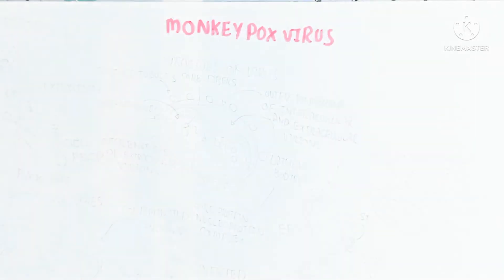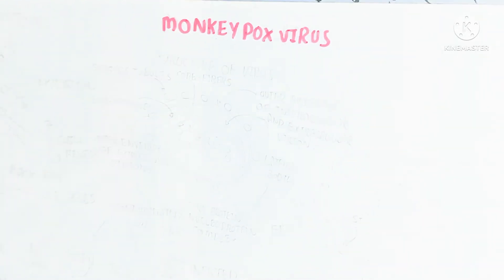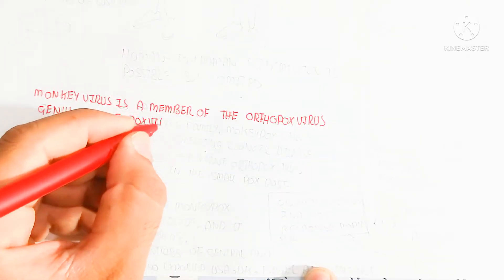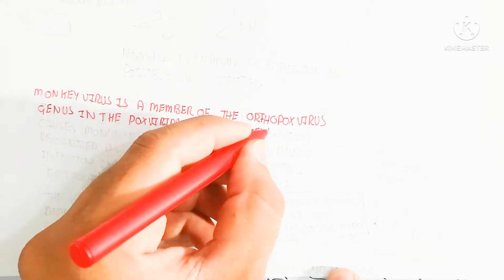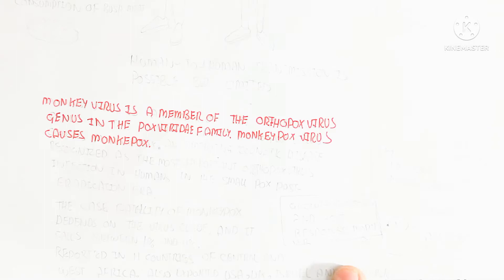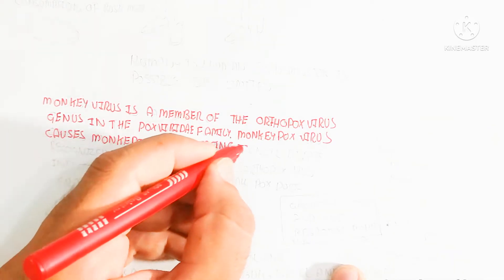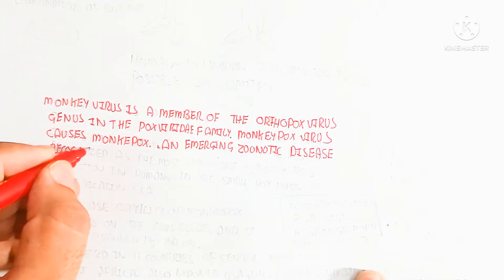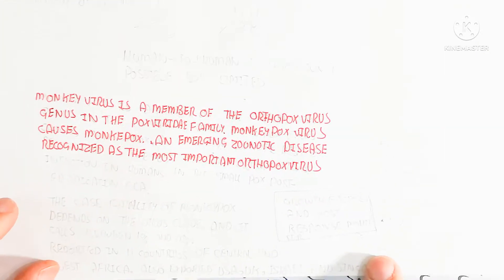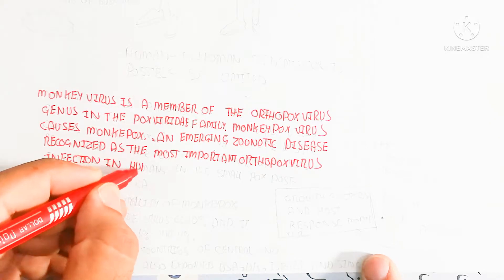In this video we will discuss the monkeypox virus, its life cycle, infection period, symptoms, and structure. The monkeypox virus is a member of the Orthopoxvirus genus in the Poxviridae family. Monkeypox is an emerging zoonotic disease, meaning it can cause infection in both animals and humans. It is recognized as the most important Orthopoxvirus infection in humans in the post-smallpox eradication era.